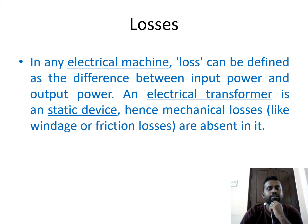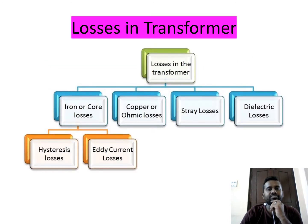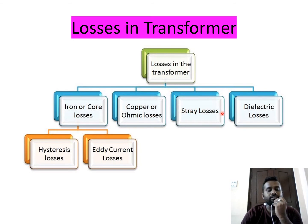An electrical transformer is a static device — it is stationary, unlike rotating machines like motors and generators. Hence, mechanical losses like frictional and windage losses are absent in a transformer. The losses in a transformer can be classified into four categories: iron or core losses, copper or ohmic losses, stray losses, and dielectric losses.